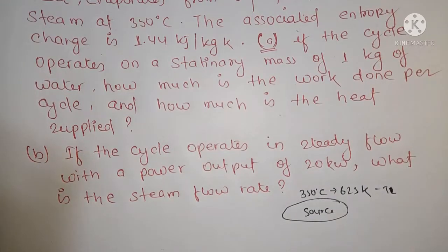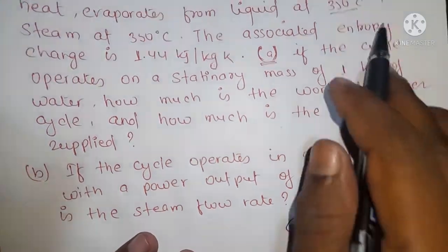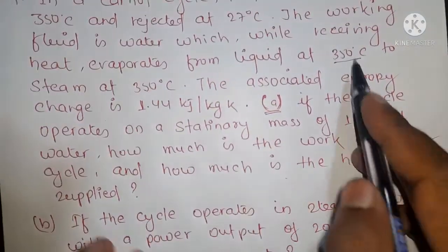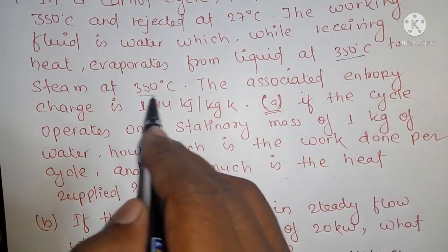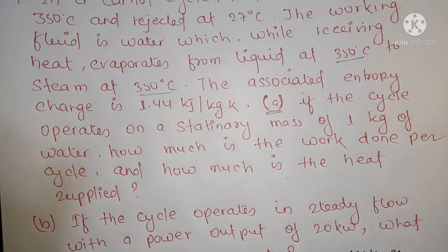Working fluid kya kar raha hai — working fluid water hai. Water ki temperature 350 degrees Celsius pe hai, aur woh steam hai 350 degrees Celsius pe — matlab saturated state mein hai. Saturated state means constant temperature aur pressure pe water phase change karta hai.